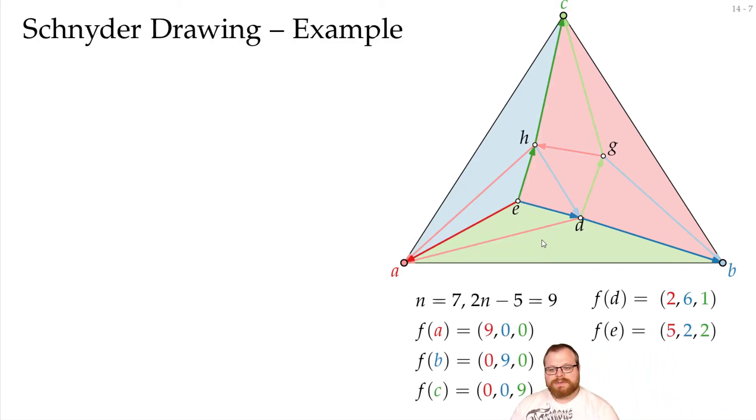For e, we have 2 green, 2 blue, and 5 red faces. For g, we have 1, 2, 3, 4, 5, 6 green, 2 blue, and 1 red face. And for h, we have 4 red, 1 blue, and 4 green faces.